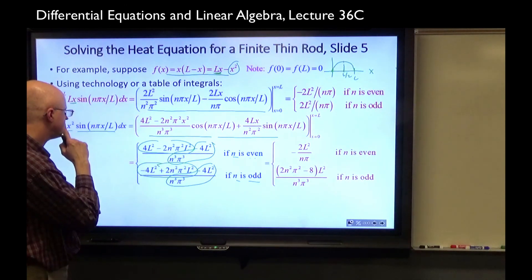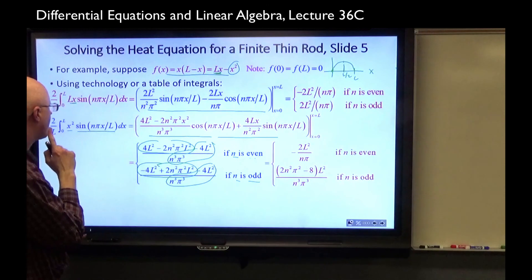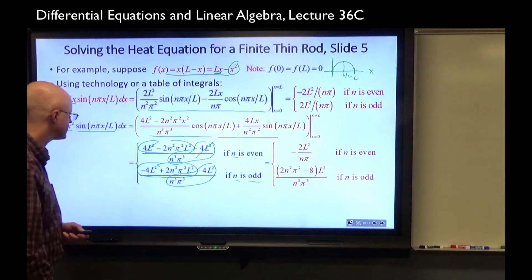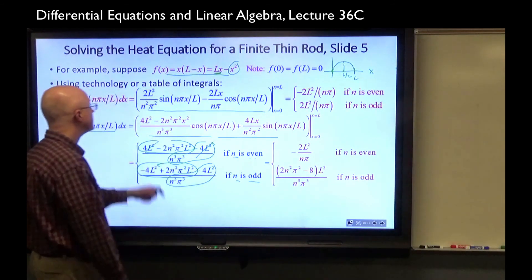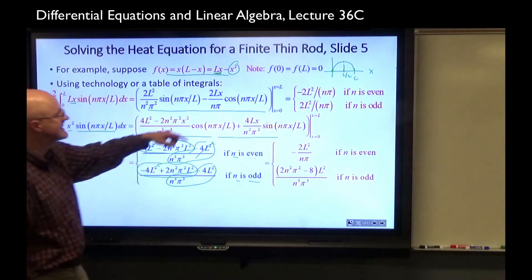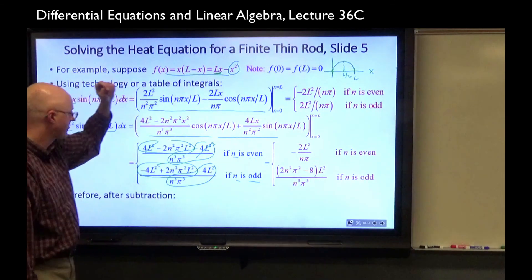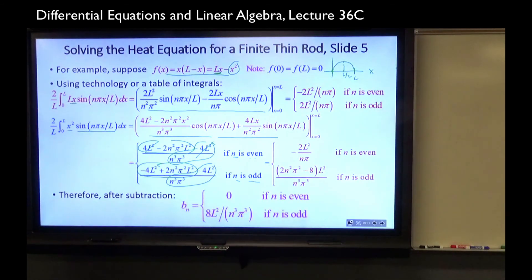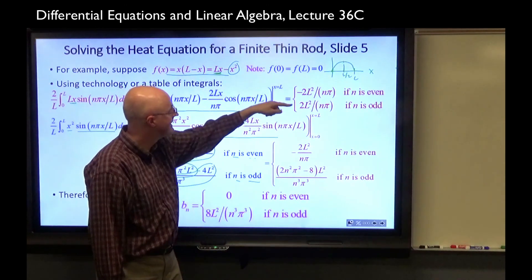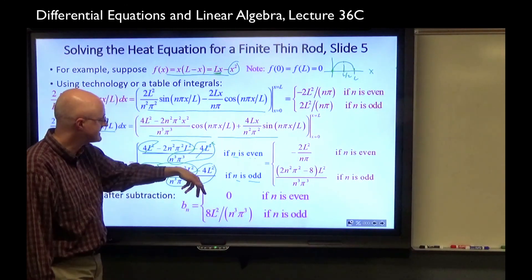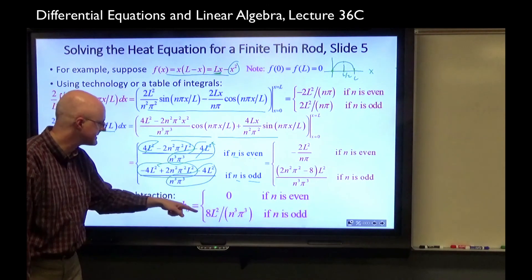This one simplifies nicely when n is even. These cancel. Whereas in this one, the 4L squared terms do not cancel. So it's more complicated when n is odd. However, to get b_n, we have to take essentially this expression minus this expression because of the minus sign there. And it actually simplifies pretty nicely. When n is even, it actually simplifies to zero. Essentially, this minus this is zero. When n is odd, it's this minus that. And that simplifies unbelievably, you might say, pretty nicely to just this. Double check that. So that's what b_n is. It's zero when n is even. And it's this when n is odd.